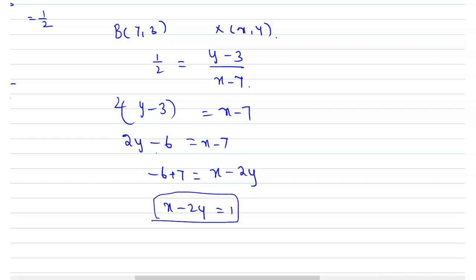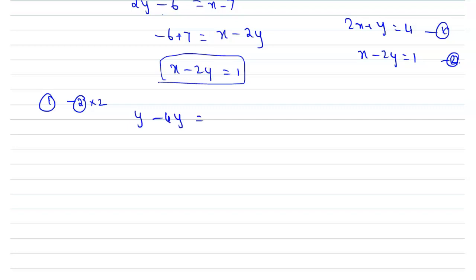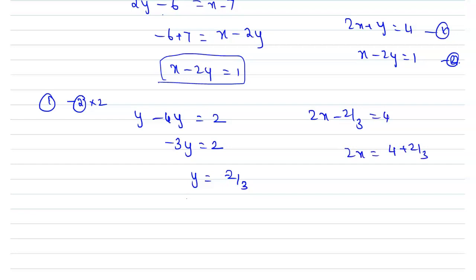Now we solve the two equations: 2x + y = 4 (equation 1) and x − 2y = 1 (equation 2). Multiply equation 2 by 2 and subtract from equation 1. We get y − 4y = 2, so −3y = 2, giving y = −2/3. Substituting back into equation 1: 2x + (−2/3) = 4, so 2x = 4 + 2/3 = 14/3, giving x = 7/3. Hence the point X has coordinates (7/3, −2/3).